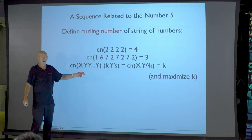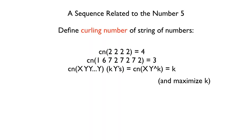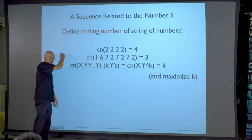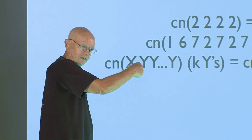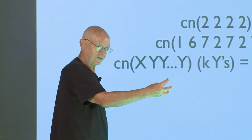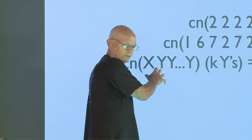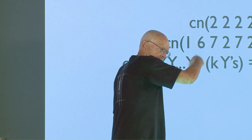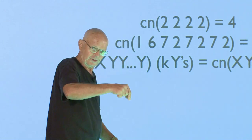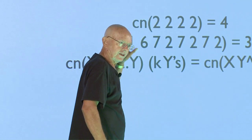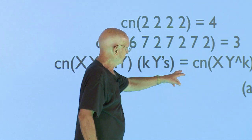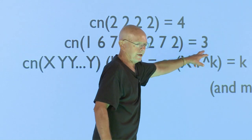So that's what the curling number is in general. You write your string of numbers as some prefix, which might be missing, and then the maximum number of copies of some tail. I have a slide with a drawing of a pig: the body of the pig is the prefix, which might be missing, and then the tail is the curl. The number of curls in the tail is the curling number of the string, which in this case is 3.